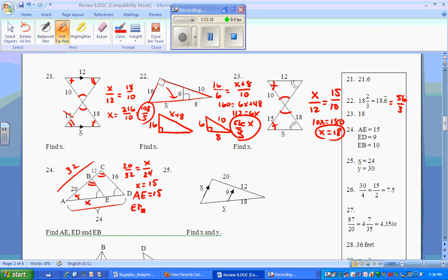Which then makes ED equal to 24 minus 15, which equals 9. And then if you want EB, you've got to compare this triangle with that triangle. For EB, I would do 20 is to 32, as BE is to 16. Cross multiply, and EB equals 10. There's your three answers that we were looking for.